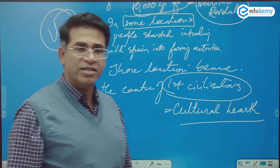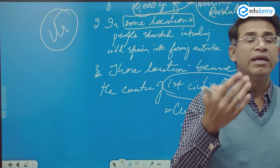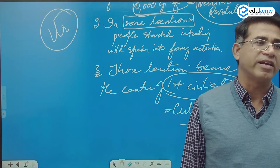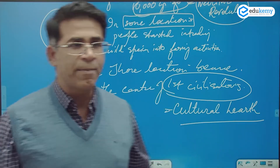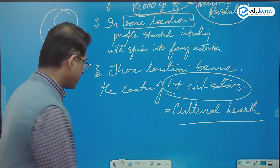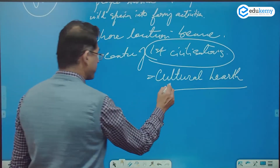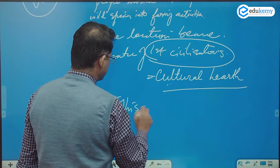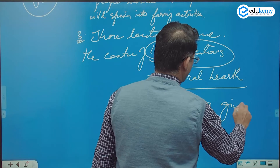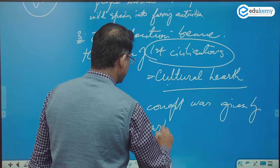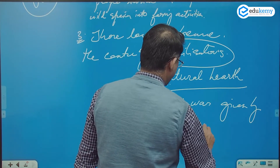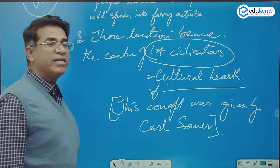Those types of places were called cultural hearths. This concept was given by Carl Sauer — C-A-R-L — Carl Sauer. He was an American geographer, active in the 1920s and 30s. The locations that became the centers of first civilizations are called cultural hearths.